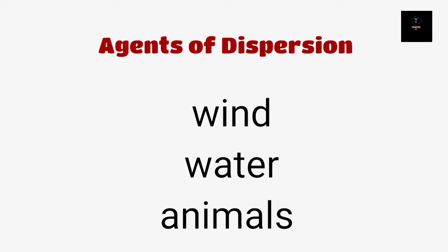Make sure you remember these three agents. Whenever asked what the agents of dispersion are, you must be able to answer: there are three agents — wind, water, and animals. One by one we will see how wind acts as an agent, how water acts as an agent, and how animals act as an agent.